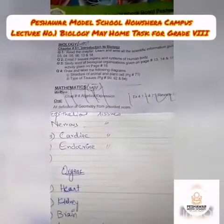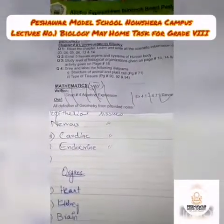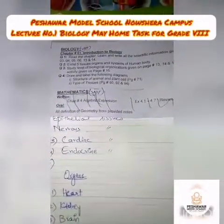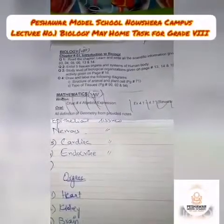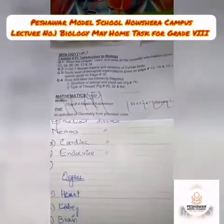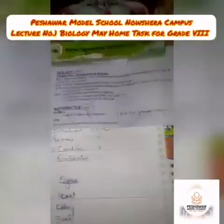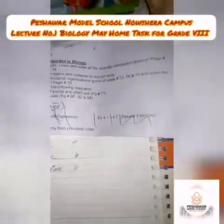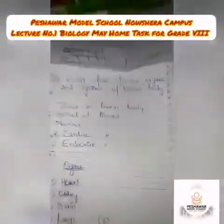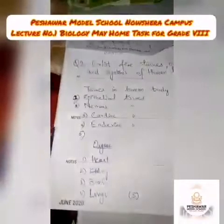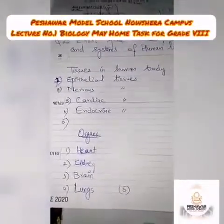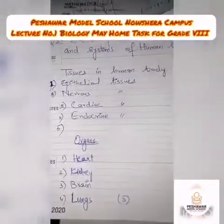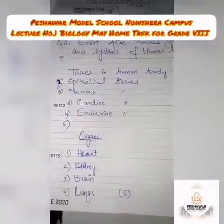When your summer vacations are over, I am going to check that. Now question number two is: list five tissues, organs, and systems of the human body. We have to write the five tissues, organs, and systems. There are a lot of tissues present in the human body.